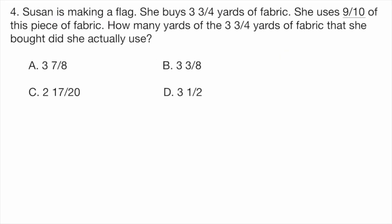Question four. Susan is making a flag. She buys three and three-fourths yards of fabric. She uses nine-tenths of this piece of fabric. How many yards of the three and three-fourths yards of fabric that she bought did she actually use? A, three and seven-eighths. B, three and three-eighths. C, two and 17-twentieths. Or D, three and a half.